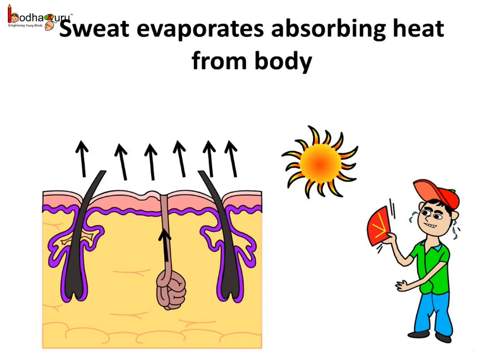But why do we sweat when it is too hot? The sweat also helps in regulating body temperature. When sweat evaporates from the body surface, it collects heat from the body. Hence the body becomes cooler. This is the reason why we feel cooler after sweating.